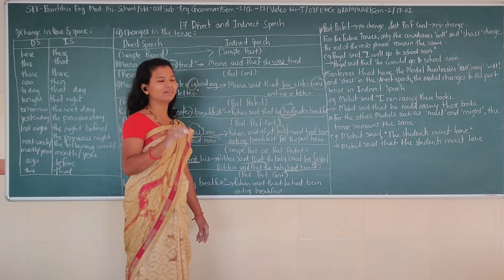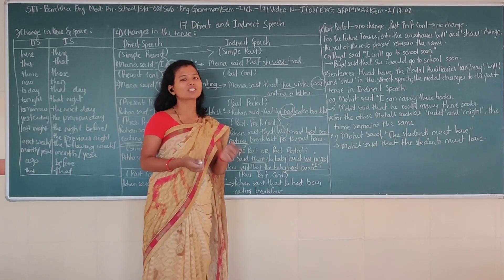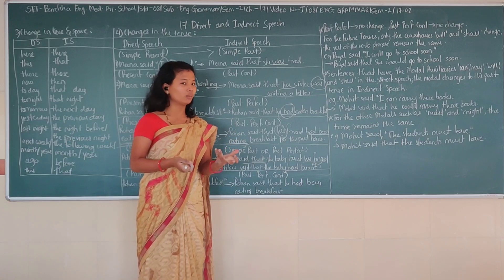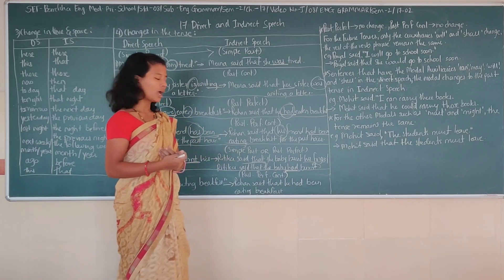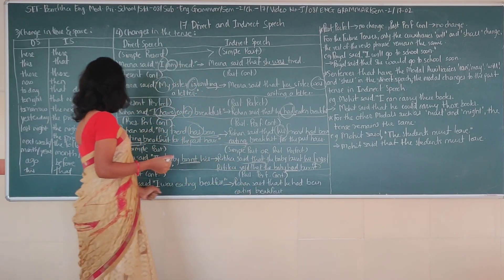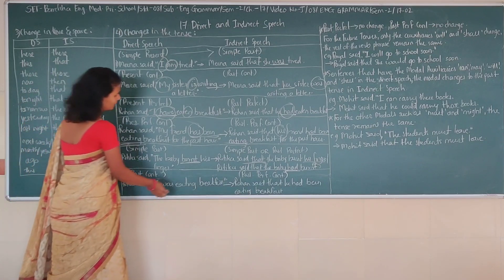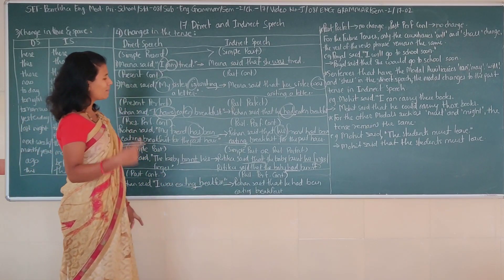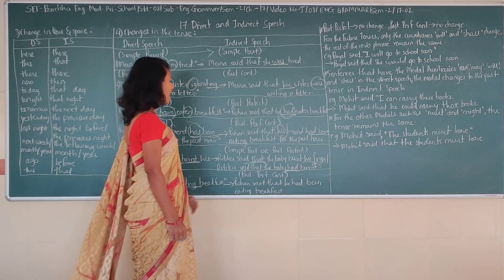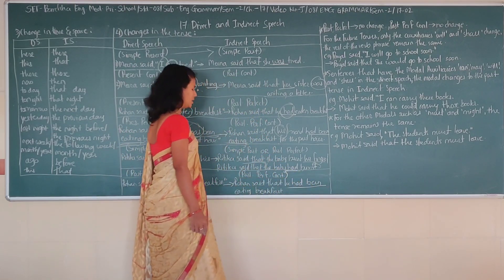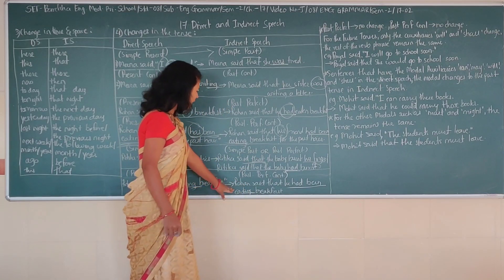Past continuous will become past perfect continuous. Past continuous means 'was' plus an 'ing' verb. In past perfect continuous you use 'had been' plus an 'ing' verb. For example: 'Rohan said I was eating breakfast.' In indirect speech: 'Rohan said that he had been eating breakfast.' So 'was eating' becomes 'had been eating'.